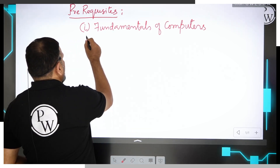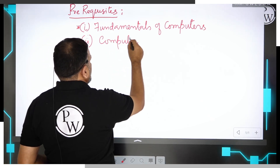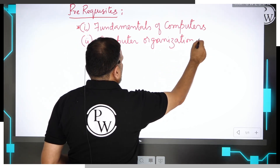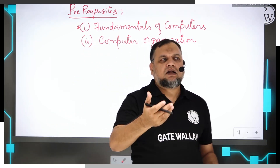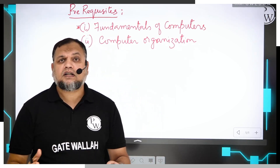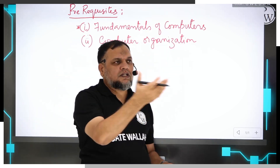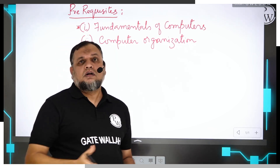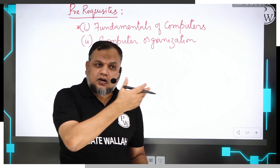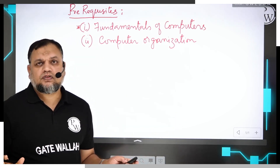Desirable — but not compulsory — is if you have studied computer organization concepts, then that is very good. If you haven't studied it, there is no problem. When we study the operating system course, we will start the foundation and discuss it with regard to concepts of computer organization — the components of a computer — and briefly cover it. Computer organization is generally a second-year course, and if you have studied it at the college level, that is sufficient.